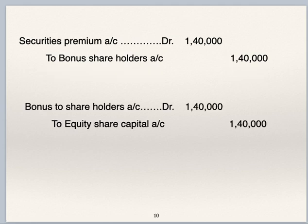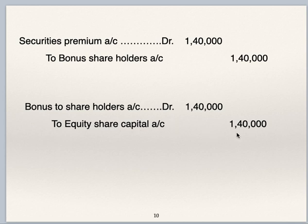This entry is for the issue of bonus shares. They have used the entire securities premium account for bonus shares. Securities premium account debit Rs 1,40,000 to bonus to shareholders Rs 1,40,000. Bonus to shareholders account debit Rs 1,40,000 to equity share capital account Rs 1,40,000. Bonus shares are issued using the entire amount in the securities premium account, which is Rs 1,40,000, so Rs 14,000 bonus shares are issued at Rs 10 each.